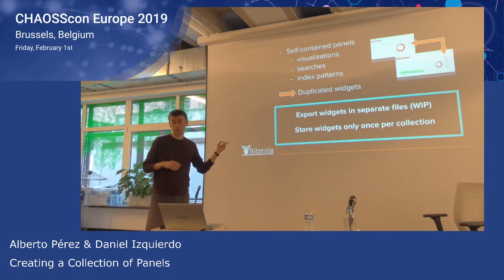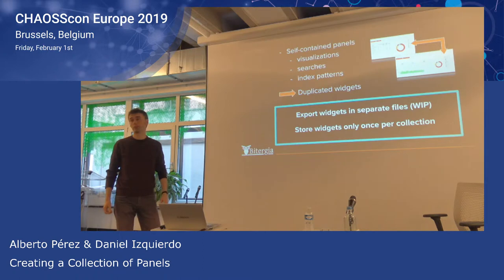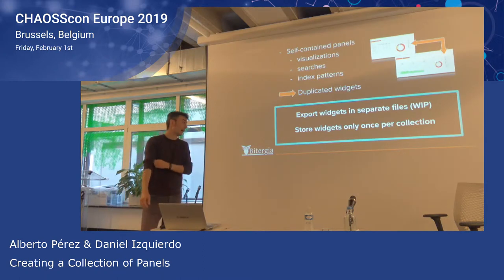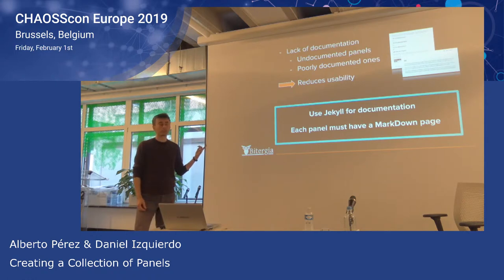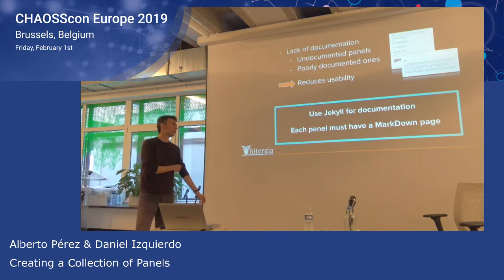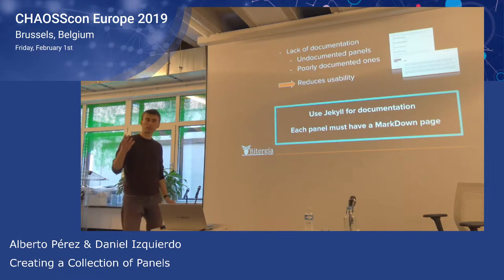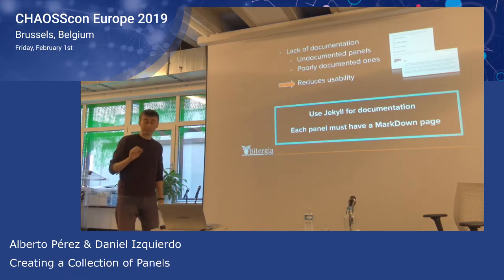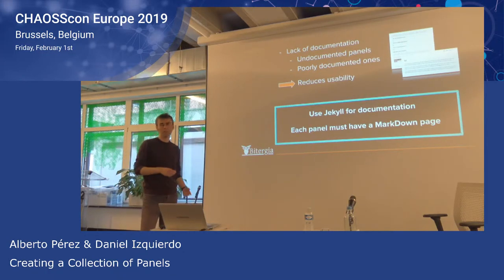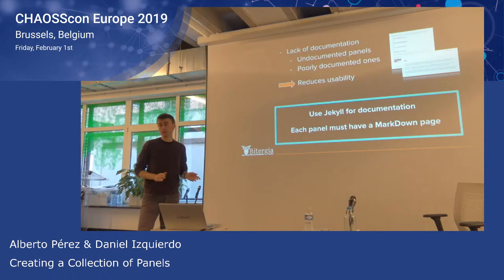This is a work in progress because it depends on a new tool. Right now in GrimoireLab we are using Kidas for importing and exporting panels, and we are moving to a new tool that allows exporting and importing things in a separate fashion. About documentation, we are using Jekyll because Jekyll is supported in GitLab and also in GitHub. You can run Jekyll on your laptop, build the documentation, and it's easy to build the web page from a markdown file. The only requirement could be to have a markdown page per each panel in the collection.